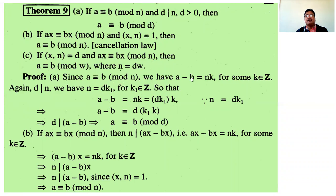Consider a minus b and try to express it in the form d into some integer. Since a minus b equals n times k, and n equals d times k1, substitute n as dk1. Therefore a minus b equals d times (k1 times k), and this is an integer because k1 and k are integers and the product of two integers is an integer. Therefore d divides a minus b.